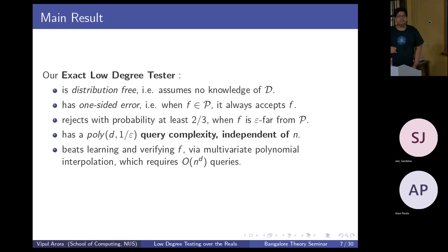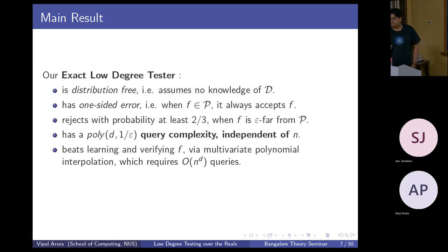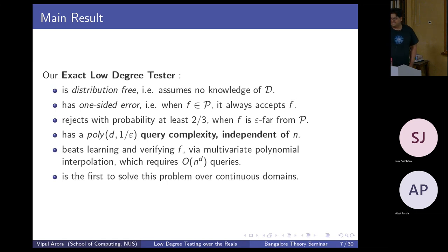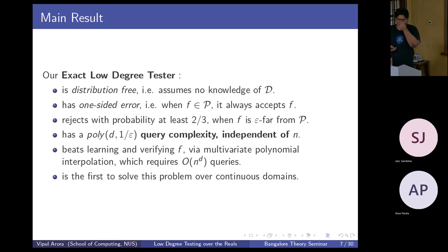To the oracle you just send an x and it returns f of x. This is the first result to solve this problem over any continuous domain — before this, it was done only over finite domains. Atom-like distributions are trivially handled.